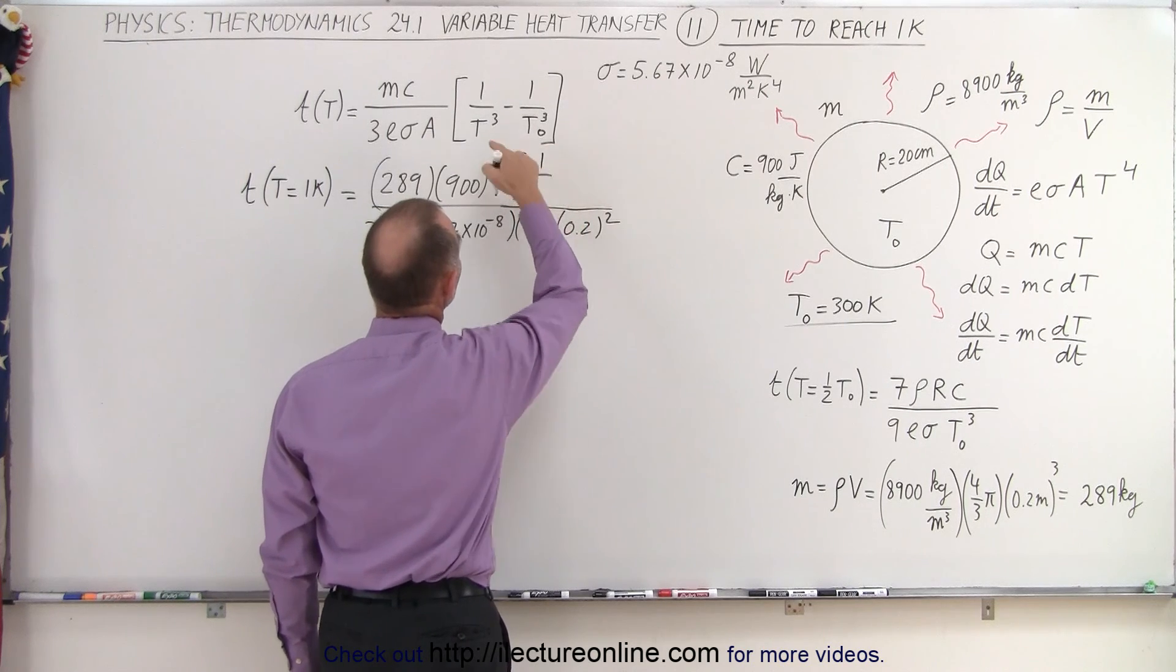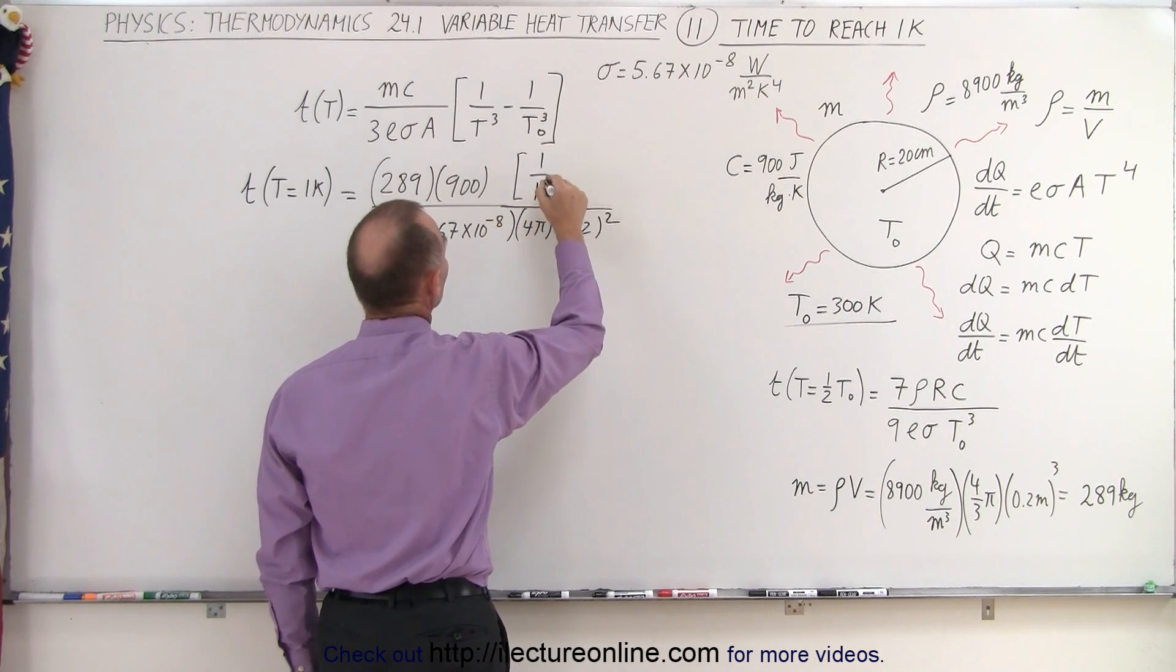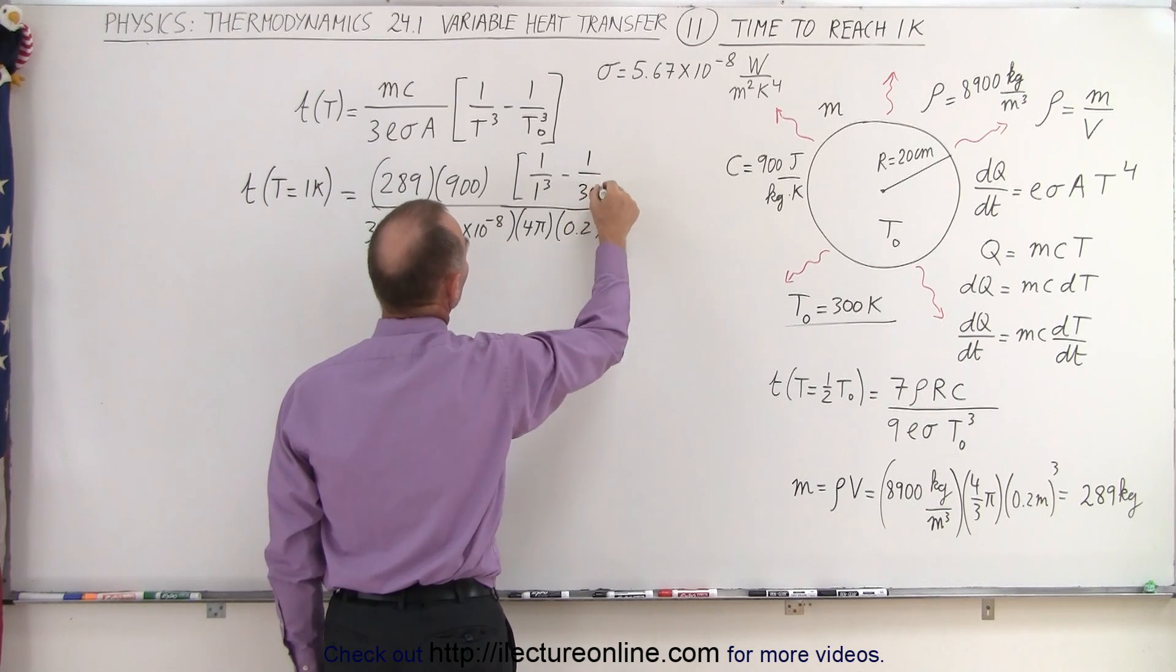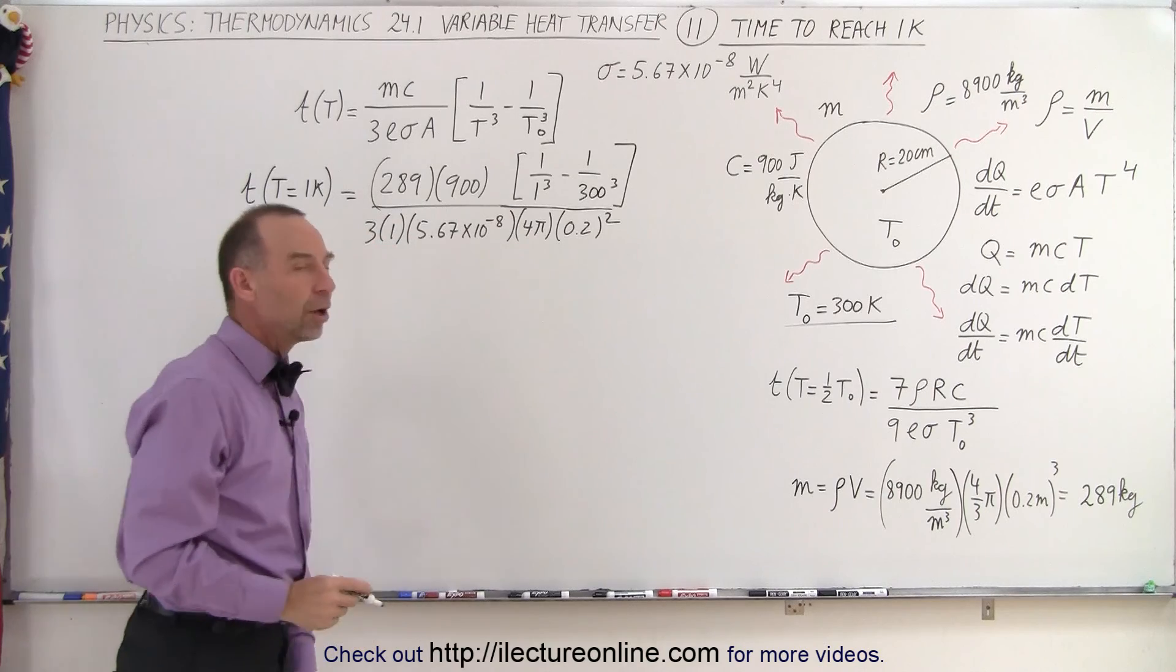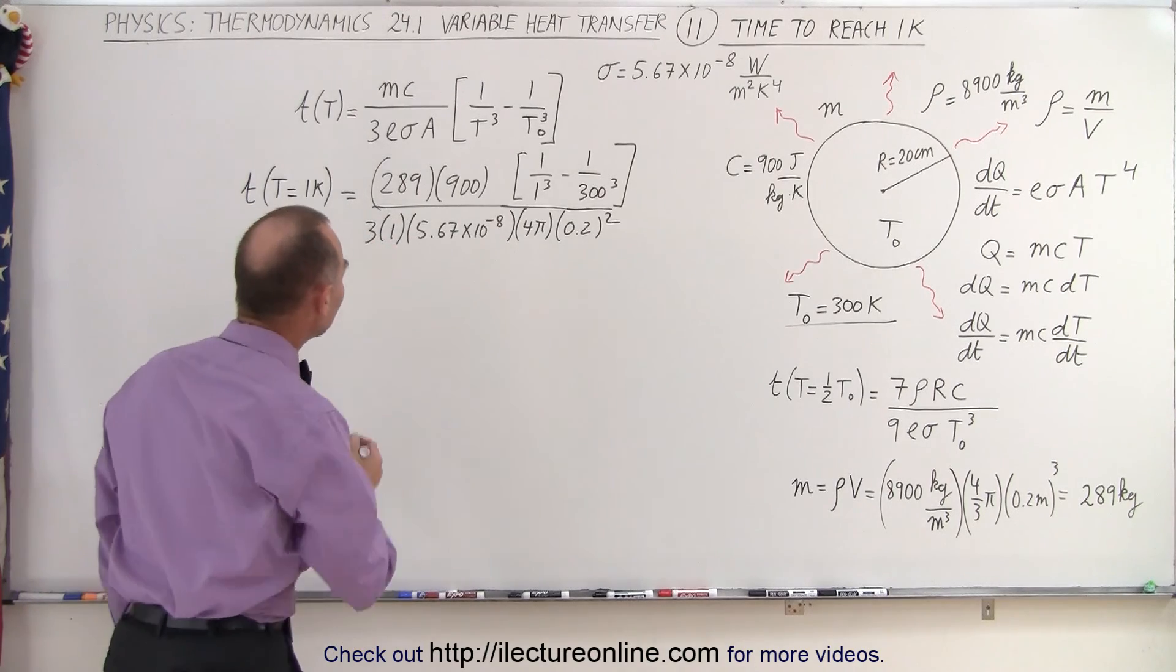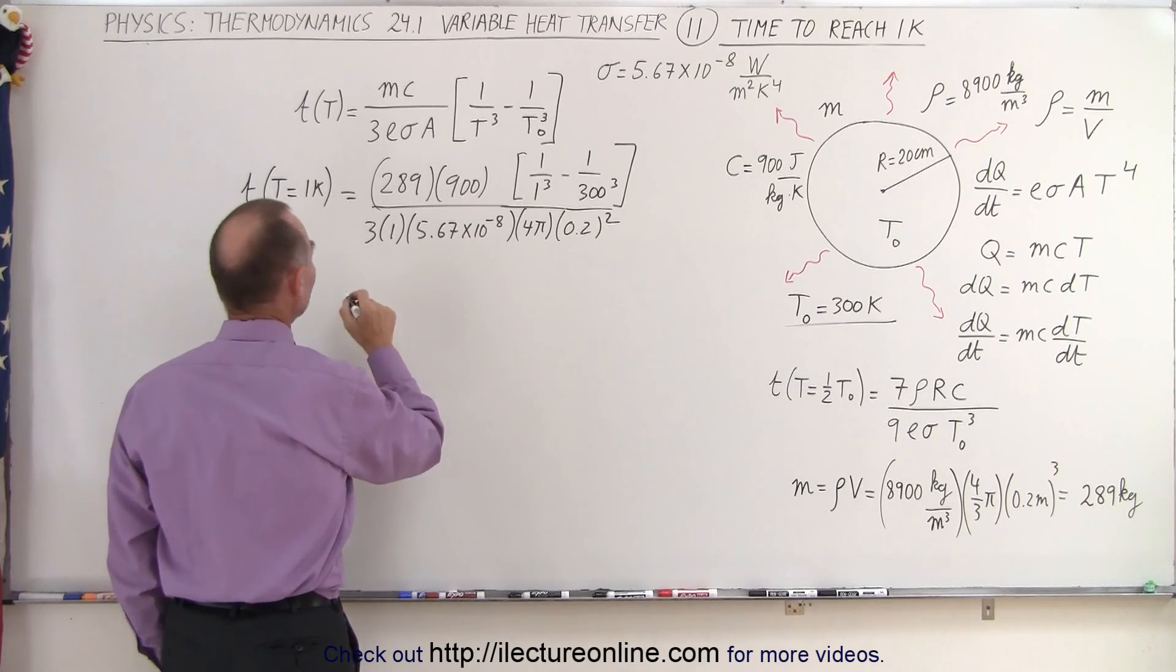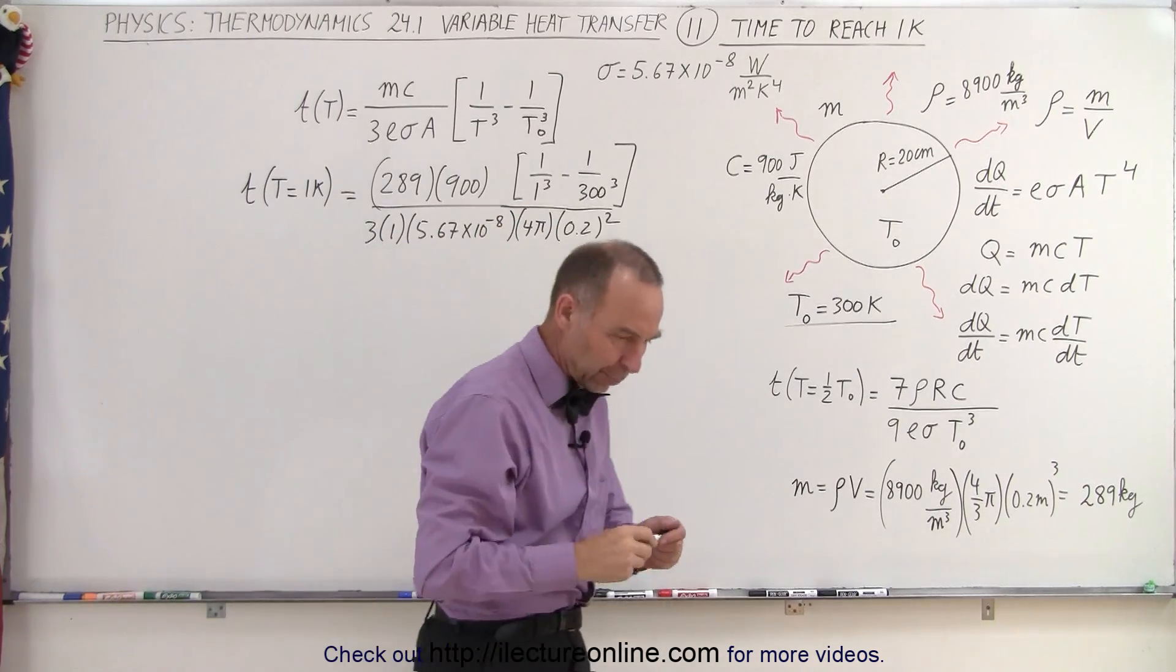Then we still have in the numerator this quantity right here, so it would be one over the final temperature, that would be one cubed, minus one over three hundred cubed. How long would it take? Well, let's find out. Let's plug in all the numbers and see what we get, and I think we can figure that out with a calculator.